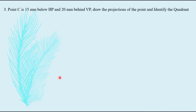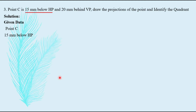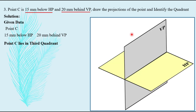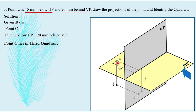Third question: point C is 15 mm below HP and 20 mm behind VP. Draw the projections of the point and identify the quadrant. Given data: point C is 15 mm below HP and 20 mm behind VP. Below HP and behind VP means the point is in the third quadrant. In the third quadrant, point C will have its front view below XY line and the top view at the corresponding position. Distances: 15 mm below HP and 20 mm behind VP.